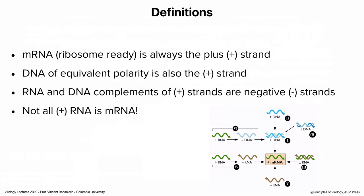Here are some important definitions. mRNA is the RNA translated on ribosomes to make protein — we say it is of positive polarity, the plus strand. It has nothing to do with electrical charge; it's just a convention. Someone years ago said let's call mRNA plus, and that stuck. DNA of the same polarity as mRNA is also called the plus strand. Complementary strands are called minus or negative strands. Despite the fact that mRNA is always the plus strand, not all plus RNA is actually mRNA — just because a virus has plus RNA somewhere in its cycle doesn't mean it will be translated.